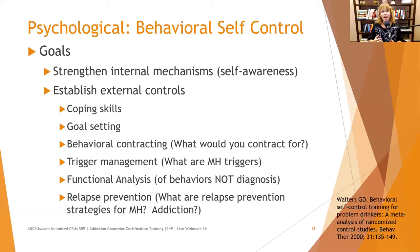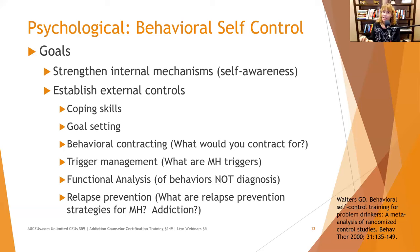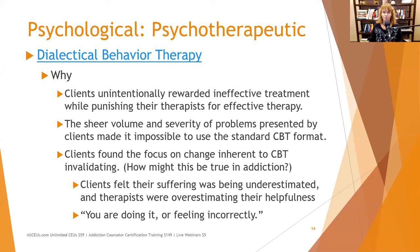Just like a hurricane requires a certain set of conditions to form, each person has a certain set of conditions that can trigger a recurrence of their major depressive episode. We want to know what those are and what the early symptoms look like, so people can intervene early. If they start feeling burned out and blue, they can say, 'I need to take this weekend off and rest' — that's early relapse prevention.